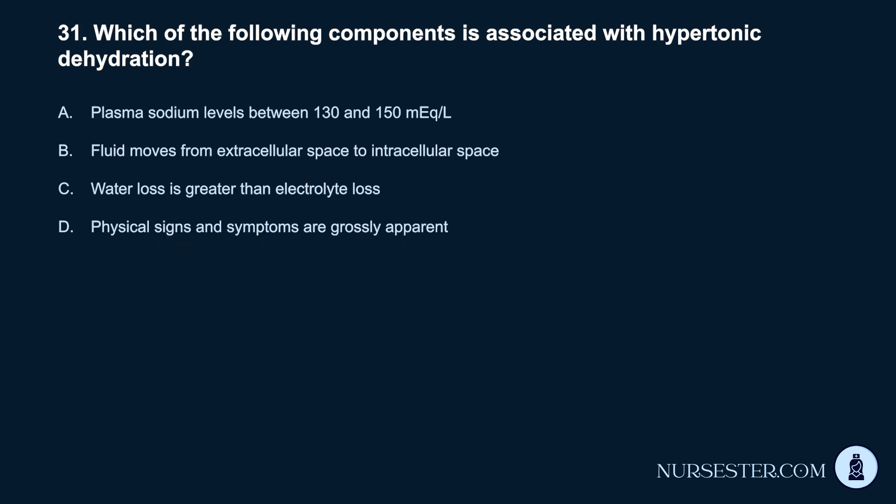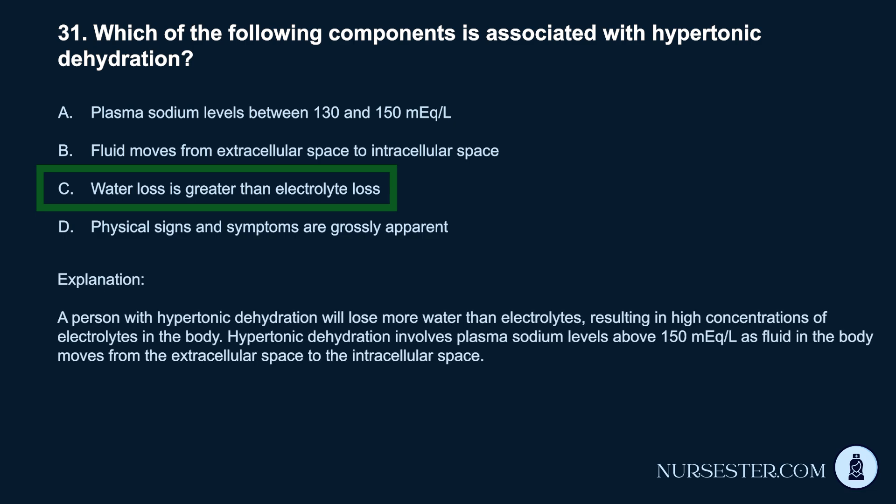Question 31. Which of the following components is associated with hypertonic dehydration? a. Plasma sodium levels between 130 and 150 mEq/L. b. Fluid moves from extracellular space to intracellular space. c. Water loss is greater than electrolyte loss. d. Physical signs and symptoms are grossly apparent. Correct answer: c. Water loss is greater than electrolyte loss. A person with hypertonic dehydration will lose more water than electrolytes, resulting in high concentrations of electrolytes in the body. Hypertonic dehydration involves plasma sodium levels above 150 mEq/L as fluid moves from the extracellular space to the intracellular space.